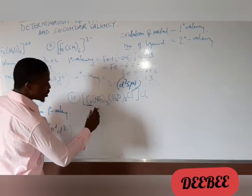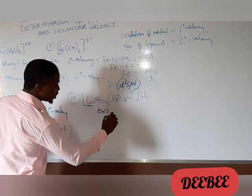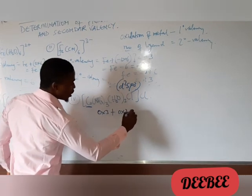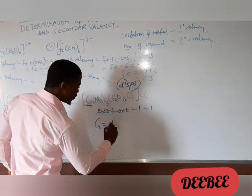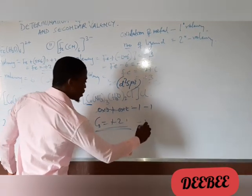And lastly, what we have here. We have cobalt at the central metal. Ethylamine, that's 0 times ethylamine, plus 0 times 2. Then we have minus 1. Minus 1. So then the cobalt is 0, 0. We have plus 2 on the other side. So that's the primary valence.